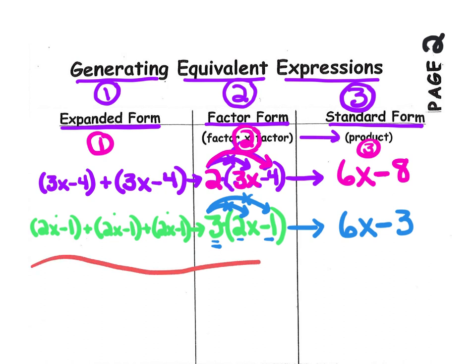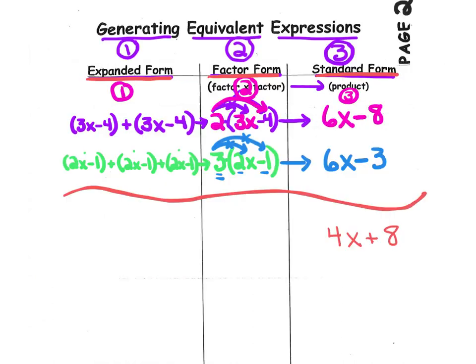That's how you move from left to right across the chart — starting with expanded form, going to factor form, and finally standard form. But what about moving from right to left on the chart? Let's see how that's done. Let's start with the expression 4x plus 6. It's in standard form, and we're going to move backwards to factor form and then to expanded form.